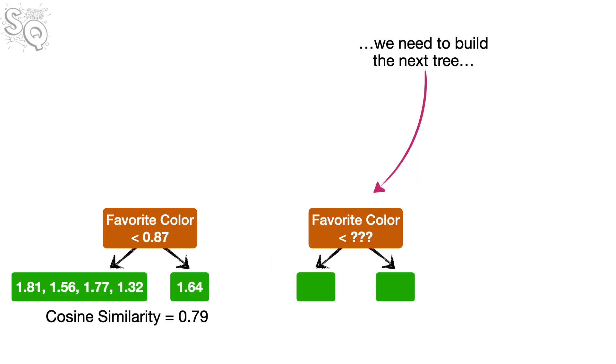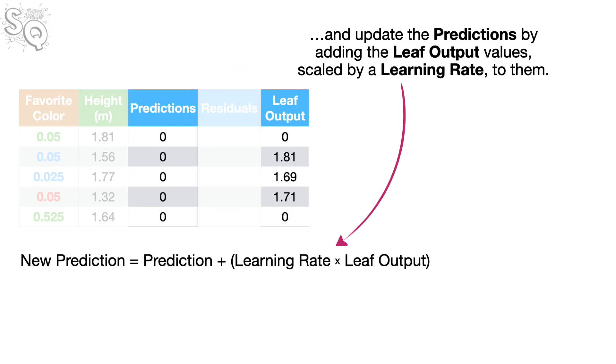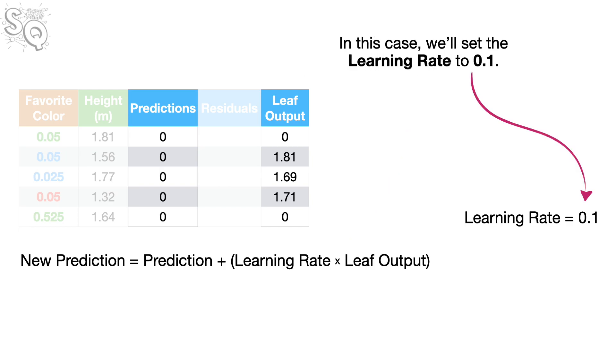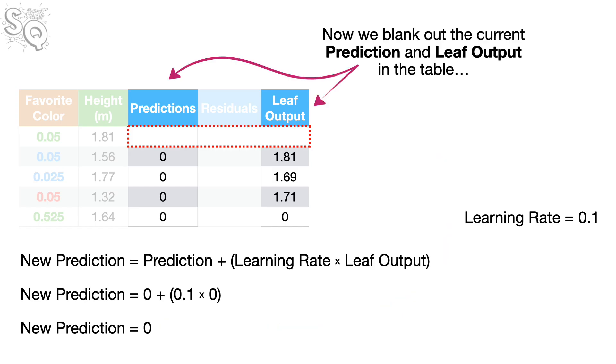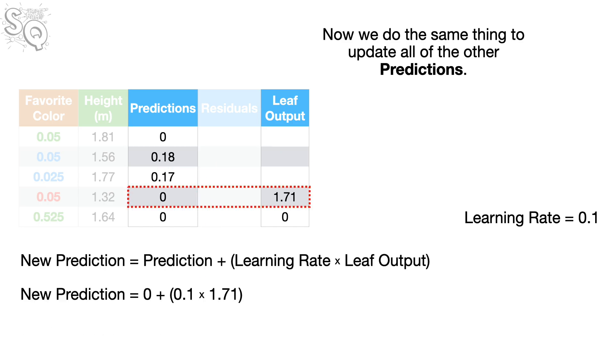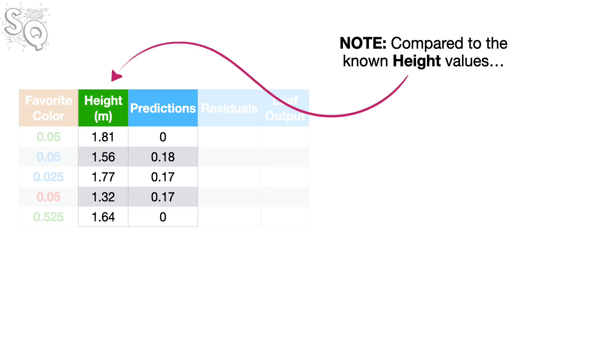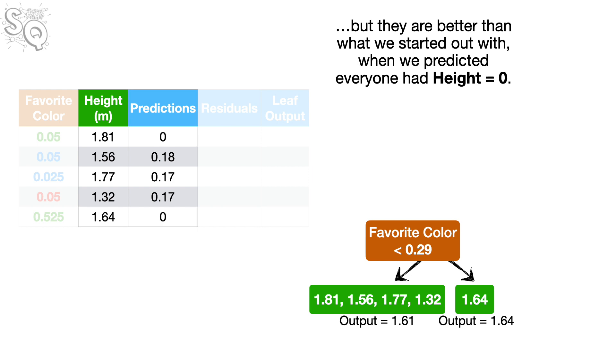Now that we've built the first tree, we need to build the next tree. So, we go back to the data and blank out the residuals, and update the predictions by adding the leaf output values scaled by a learning rate to them. In this case, we'll set the learning rate to 0.1. So, for the first row, the new prediction is, the most recent prediction, 0, plus the learning rate, 0.1, times the leaf output, 0. So we get 0 as the new prediction. Now we blank out the current prediction and leaf output in the table, and update the prediction with the new prediction, 0. Now we do the same thing to update all of the other predictions. Note, compared to the known height values, the predictions made by this tree are not very good. But they are better than what we started out with, when we predicted everyone had height equal to 0. So we're making progress, we just need to make more.